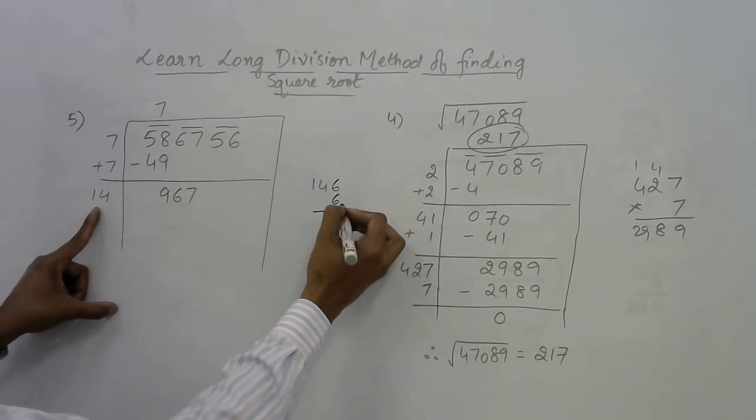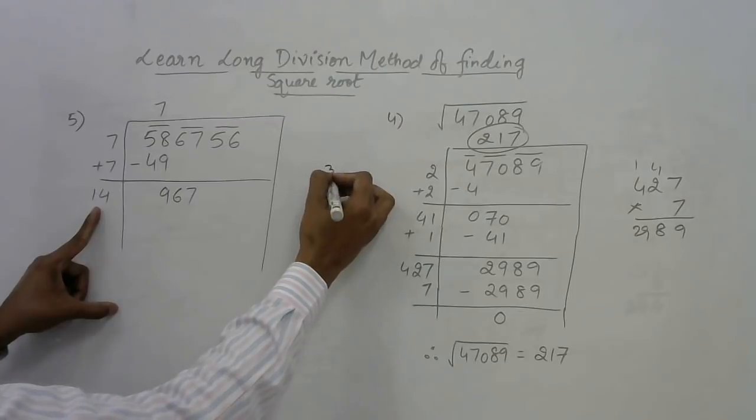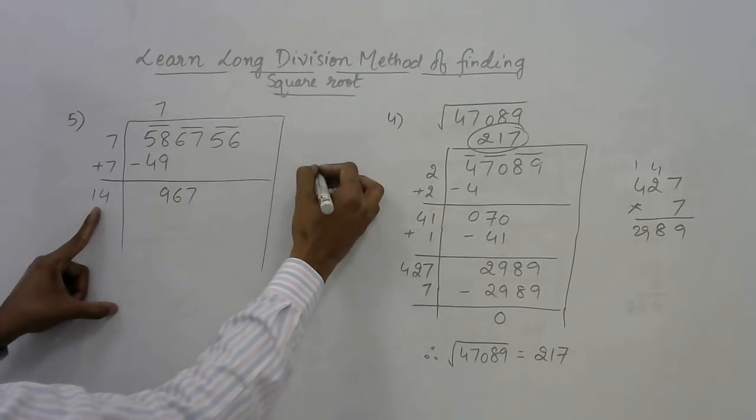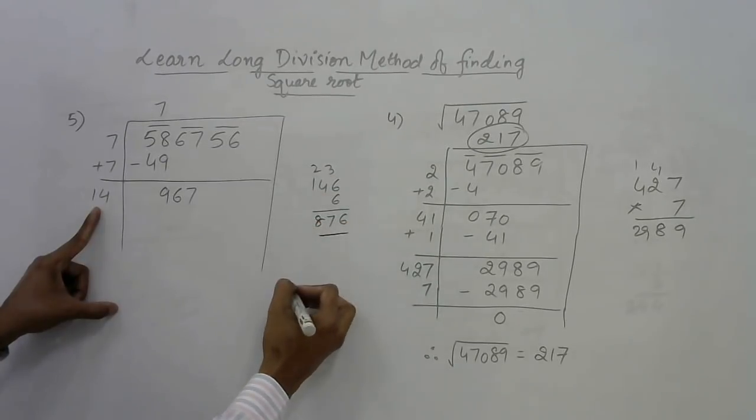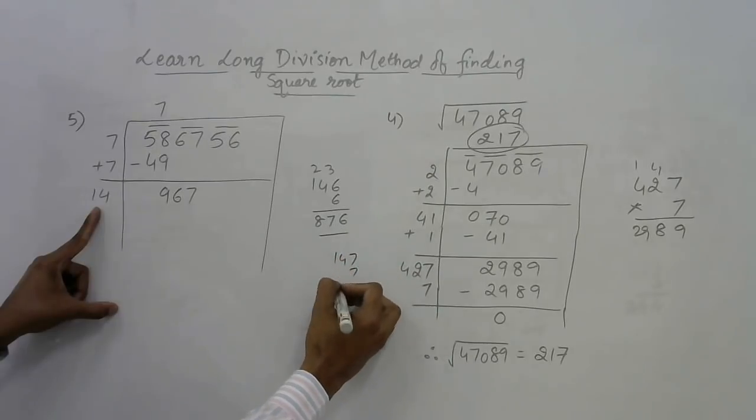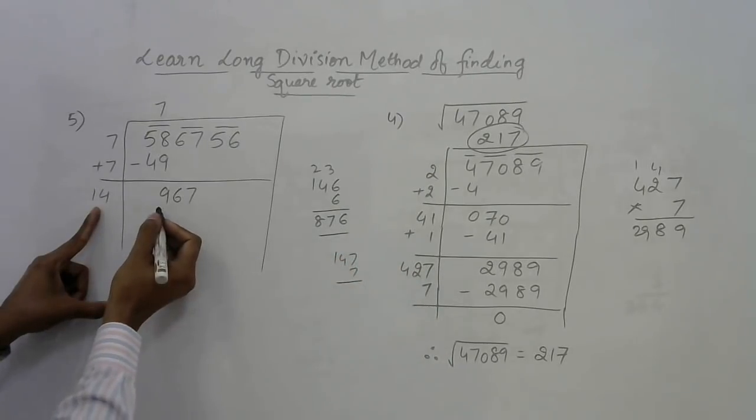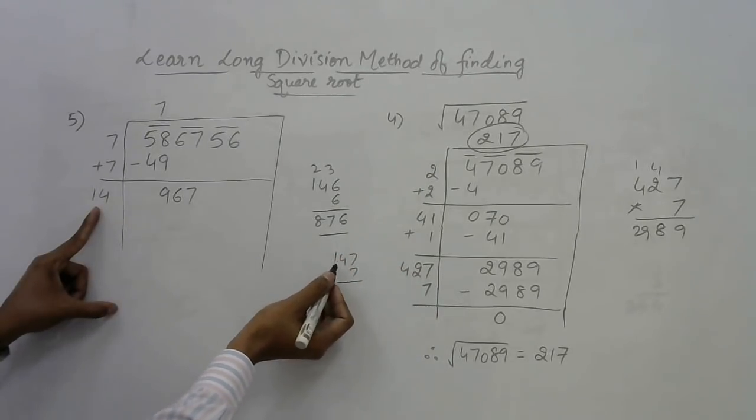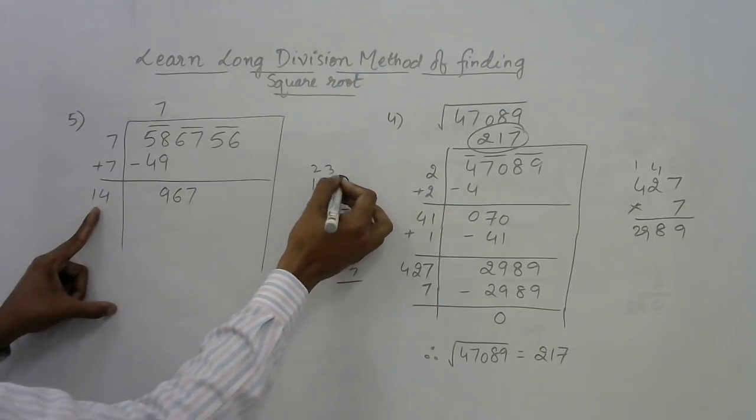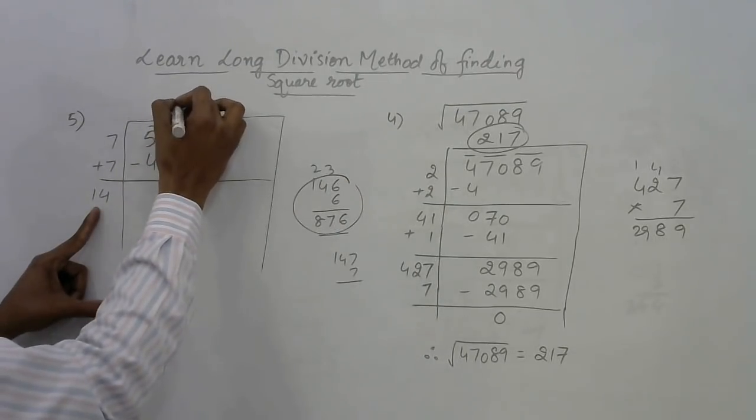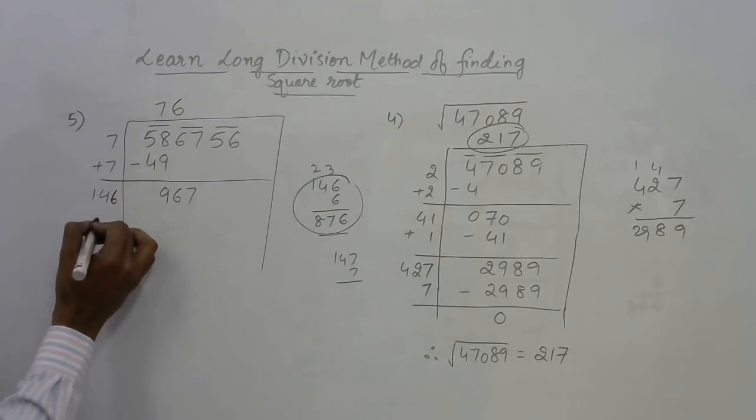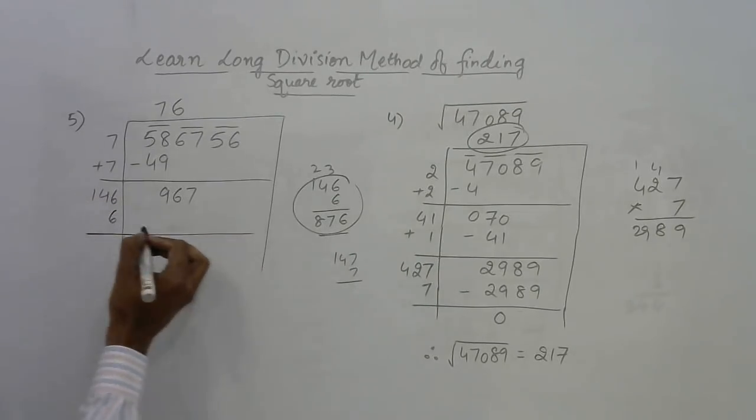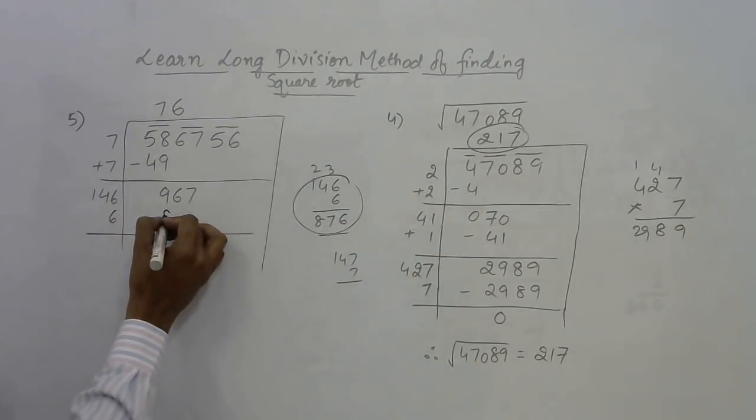6 is 36, 24, 27, so 876. But 147 into 7 will give you more than 967, because 14 into 7 is 98, so 980. So this is the correct thing. We will have 6 here, 6 here, 6 here. Now 146 into 6 is 876.